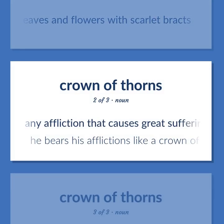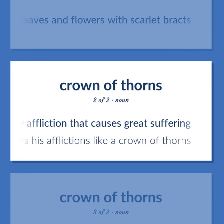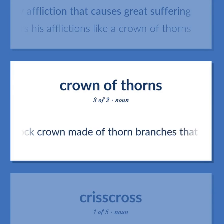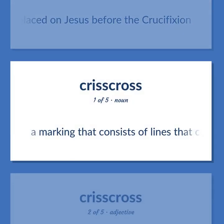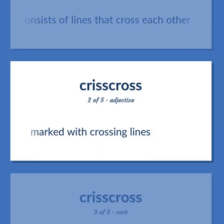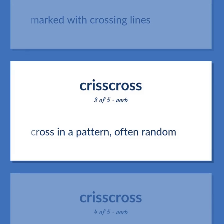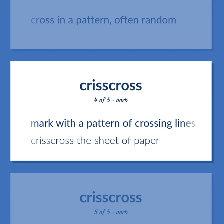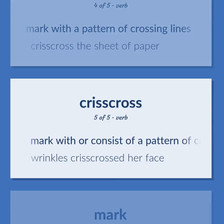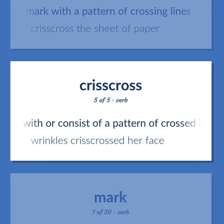Crown of Thorns: Any affliction that causes great suffering — he bears his afflictions like a crown of thorns. A mock crown made of thorn branches that Roman soldiers placed on Jesus before the crucifixion. Crisscross: A marking that consists of lines that cross each other. Marked with crossing lines. Crisscross in a pattern of crossing lines — crisscross the sheet of paper. Mark with or consist of a pattern of crossed lines — wrinkles crisscrossed her face.